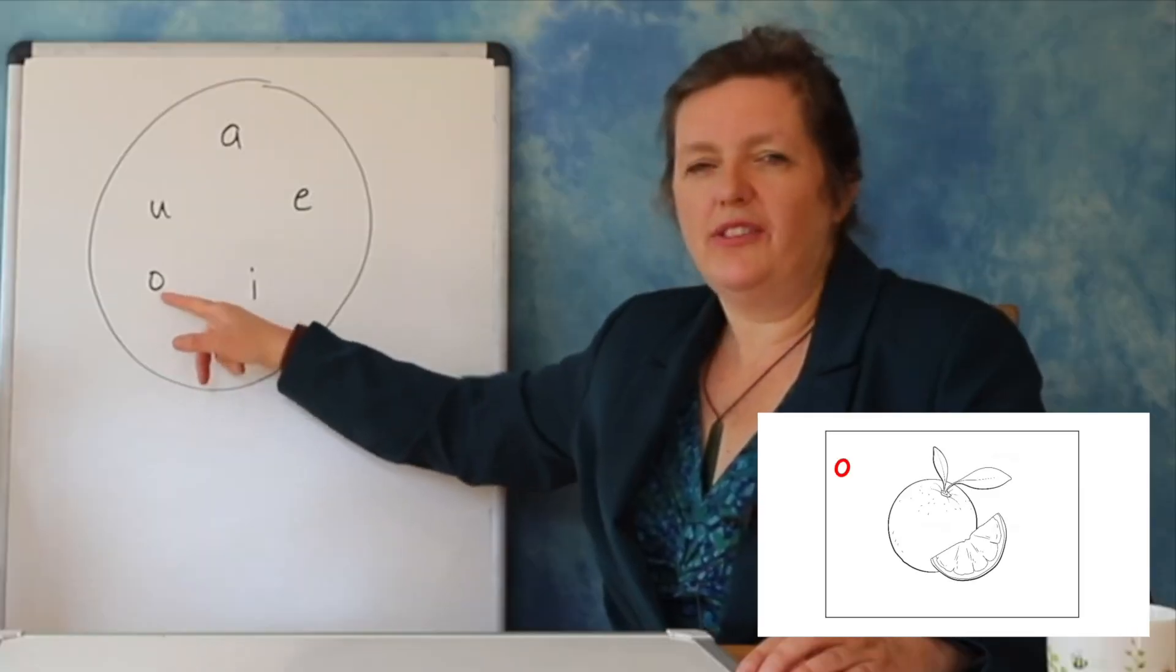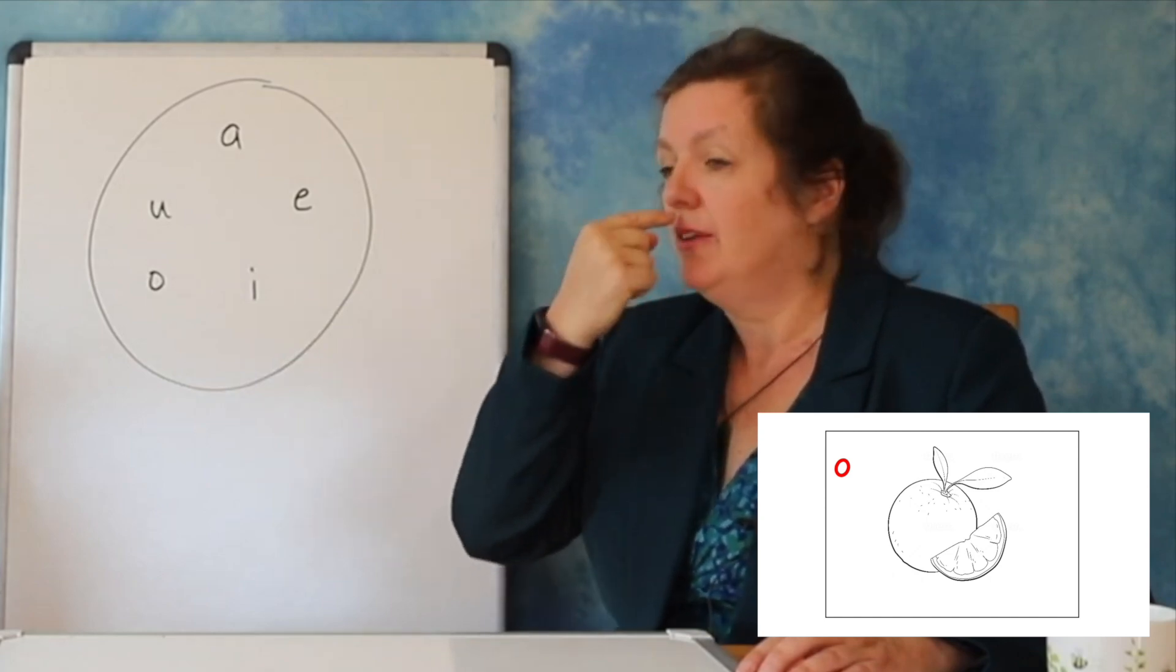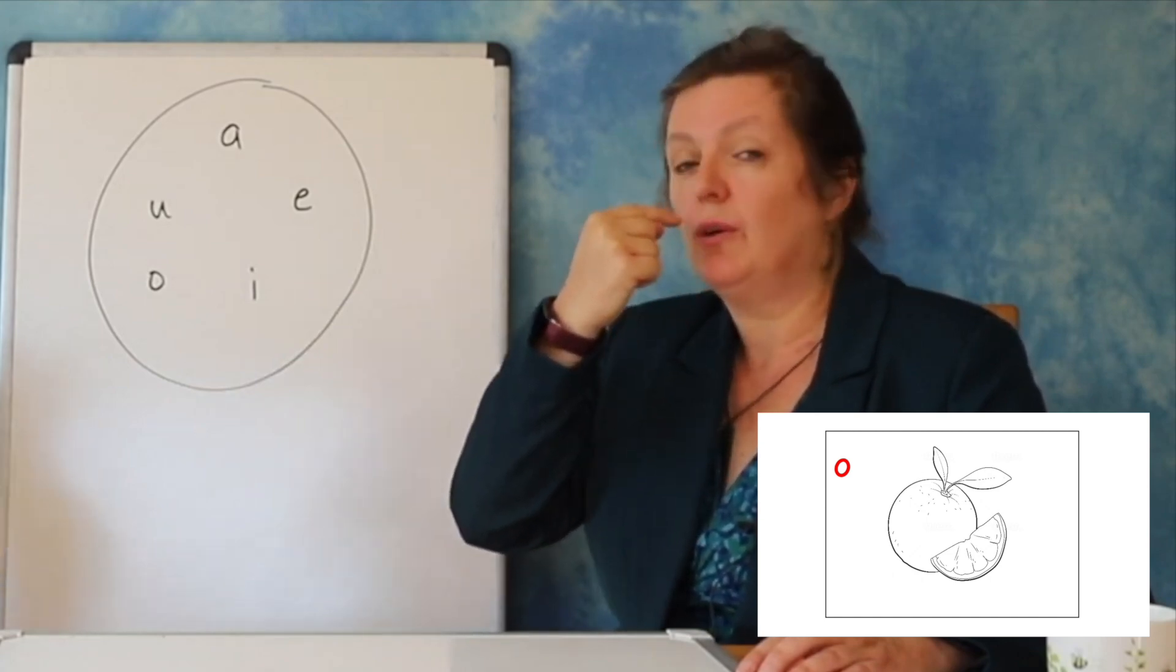O is for orange, which is a round fruit, and we make a round mouth when we say O, so I trace the shape of the circle around my mouth.